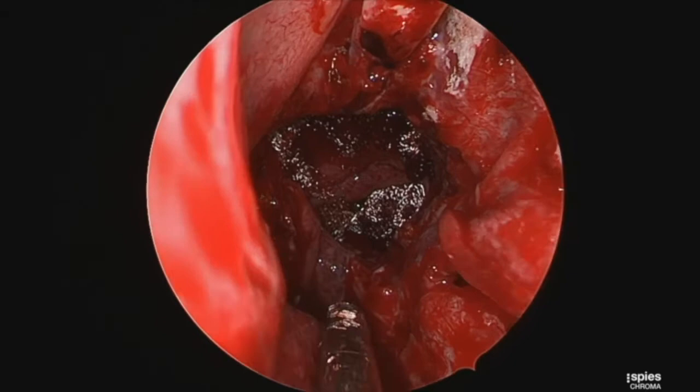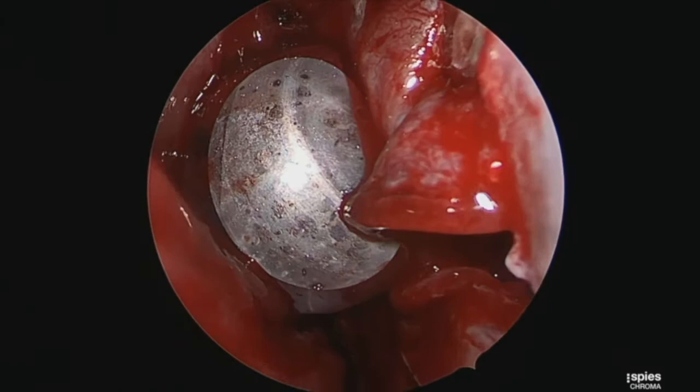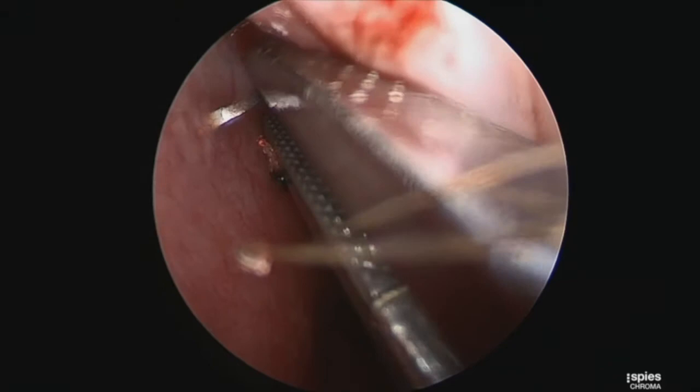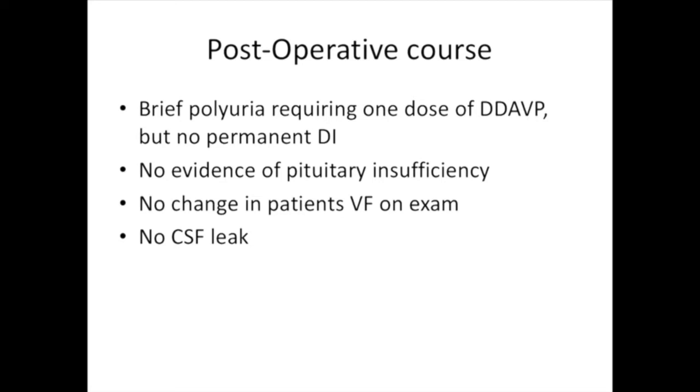Duragen collagen inlay is performed, followed by the nasal septal flap, which covers the defect widely. This is covered with Surgicel and tissue glue. A nasal Foley catheter is placed, and the free mucosal graft from the middle turbinate is placed onto the nasal septum to aid in remucosalization. In addition, the Caicedo reverse flap can be used.